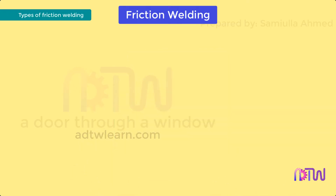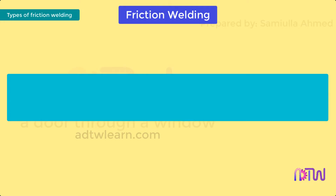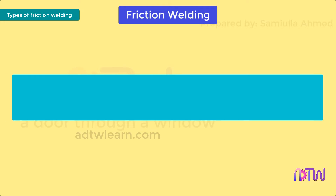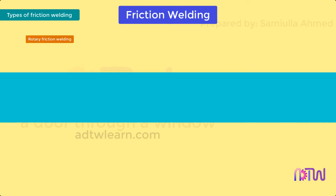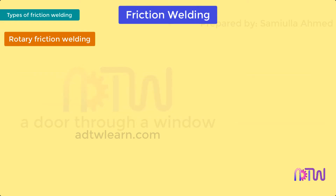There are different types of friction welding processes: rotary friction welding, linear friction welding, and friction stir welding.